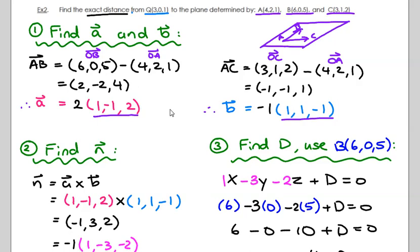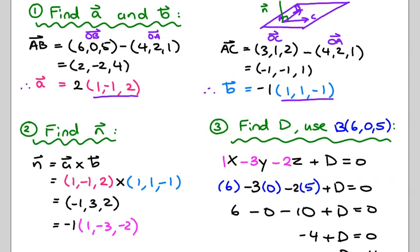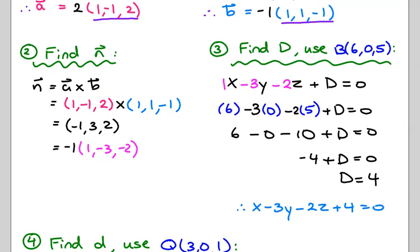Once I have those two direction vectors, I'm going to create a normal vector by doing the cross product. Doing the cross product of A and B gives you the normal vector. I don't really care about the scalar number in front — I just care about the normal vector in its reduced form, so those numbers are in simplest form.